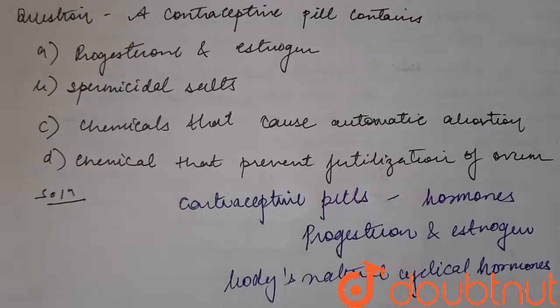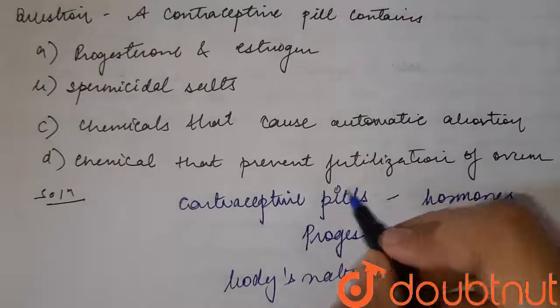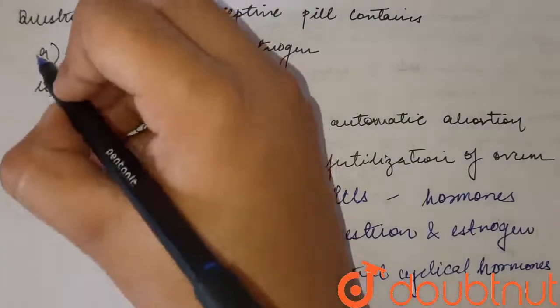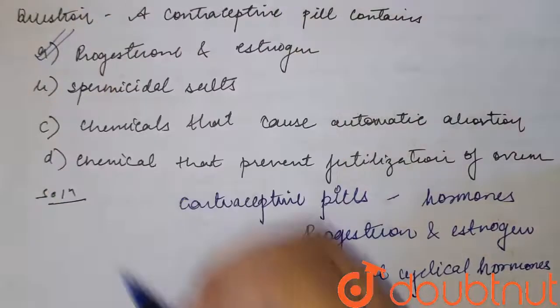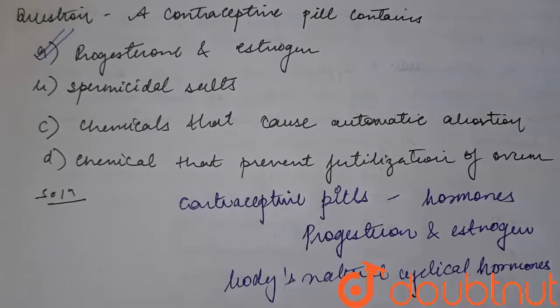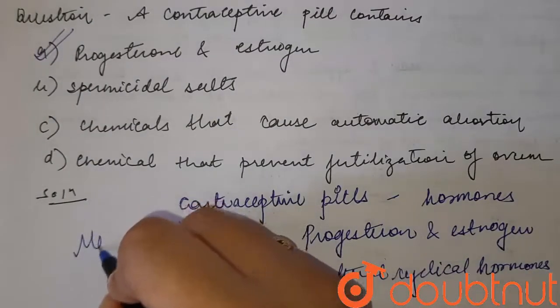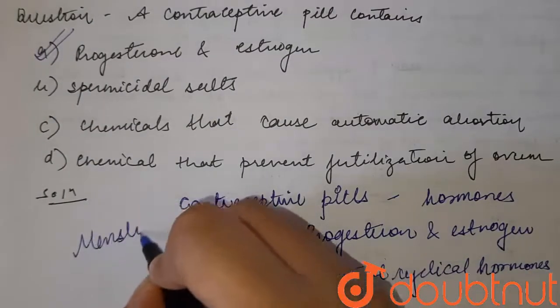So the answer to this question is option A — progesterone and estrogen. These hormones are present in contraceptive pills and they actually regulate the natural cyclical process, which is the menstruation cycle.